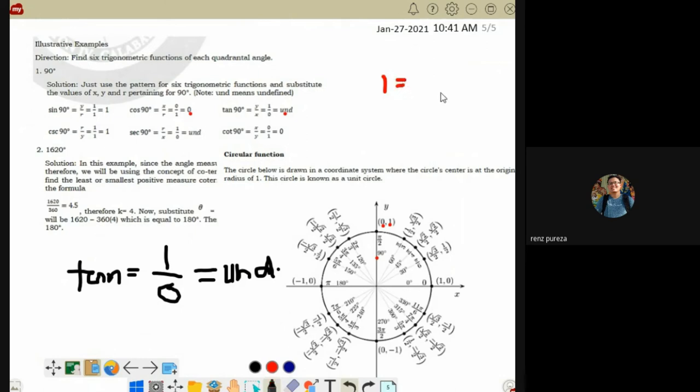When we say reciprocal, we put the denominator in the numerator. That's the definition of reciprocal. The question is, what's the denominator of 1? The denominator of 1 is 1.